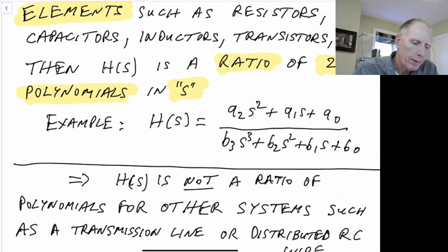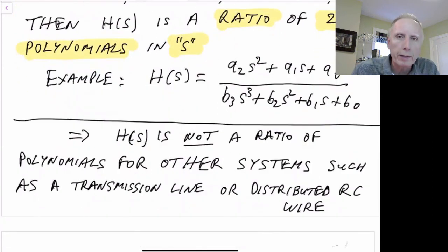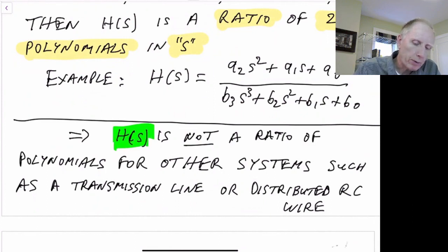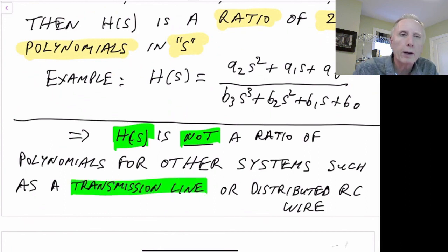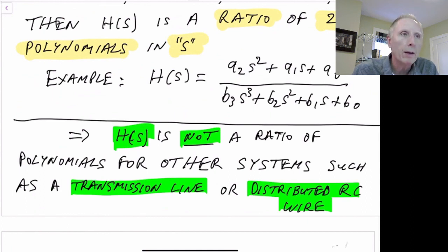That's not always going to be the case — in this course that's the only case we'll be dealing with. In other electrical engineering cases, h of s will not be a ratio of polynomials. A typical example would be a transmission line or a distributed RC wire — a wire that has resistance and capacitance distributed along its length — which would not be represented as a ratio of two polynomials.